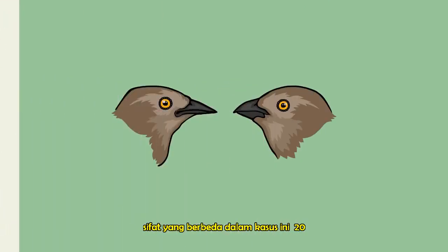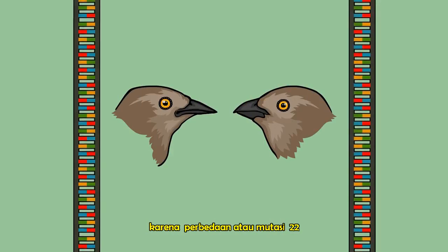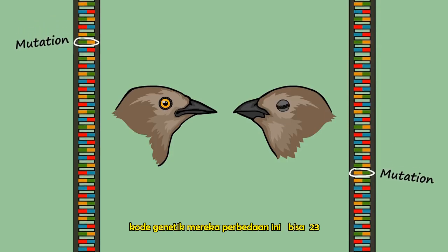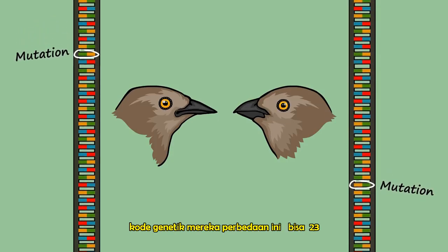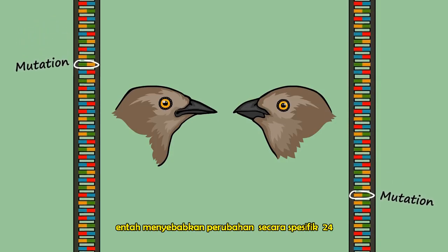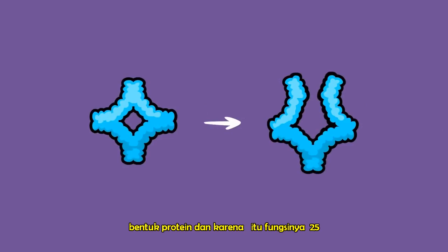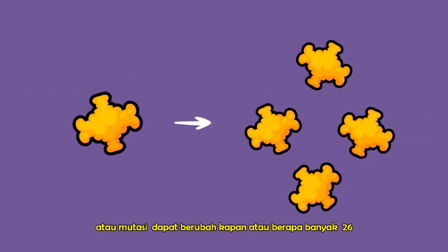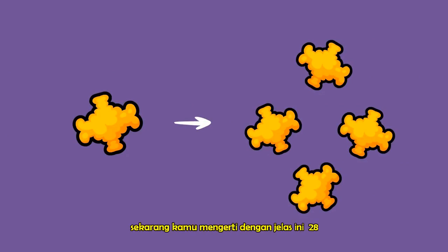Individuals have different traits — differences in beak shape, for example — largely because of differences or mutations in their genetic code. These differences can either cause changes in a specific protein's shape and therefore its function, or mutations can change when or how much of a particular protein will be produced.